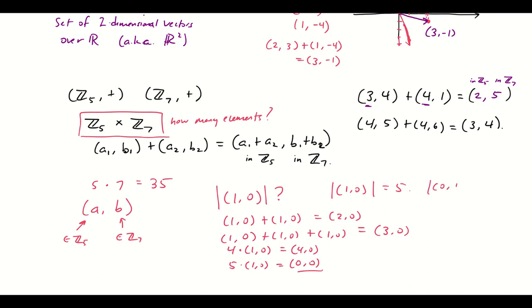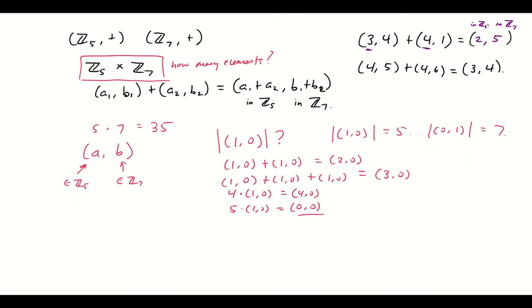I can also come up with an element, namely this one, whose order is 7. And then maybe if I combine those elements, I'll get something with a different order. Who knows? I mean, one thing that we have gone over is that the order of any element of a group of order 35 has to divide 35. So it's got to be either 1, 5, 7, or 35. So anyway, more investigation of that to come. I just wanted to introduce the idea of Z mod m cross Z mod n.